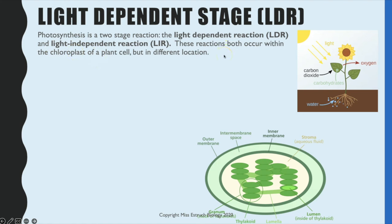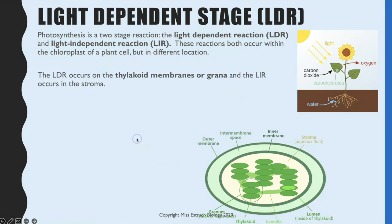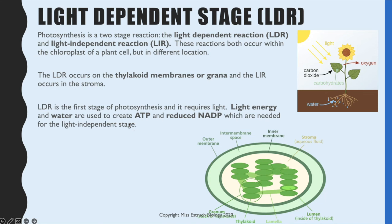The light dependent reactions occur within the chloroplast, specifically on the thylakoid membrane, or if you have stacks of them it's known as a granum for singular or grana for plural. The light independent reactions, which are covered in a different video, occur in the stroma, which is the fluid-filled center.